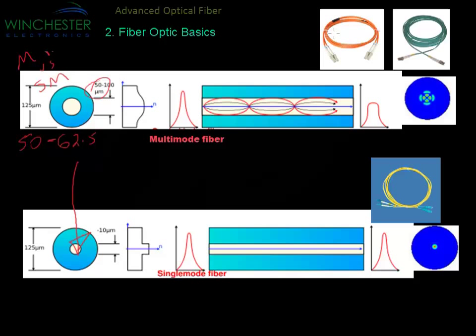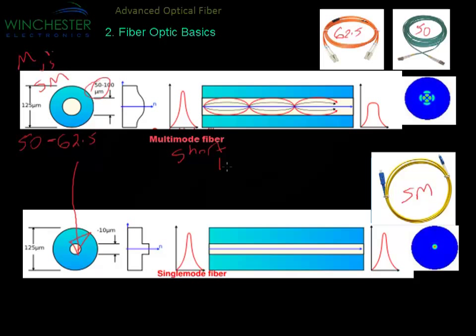Generally, multi-mode fiber acts more like copper and is applicable for shorter distances or lower speeds, whereas single-mode fiber tends to be for long distances and higher speeds.